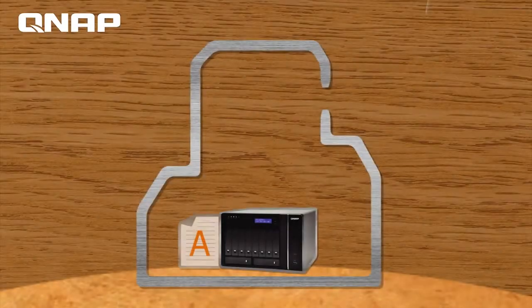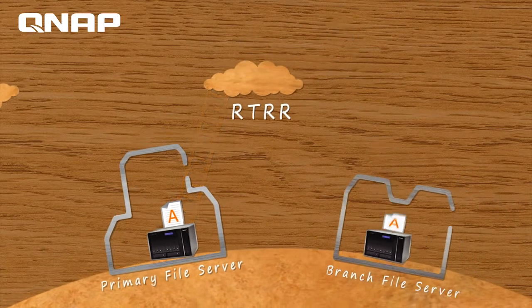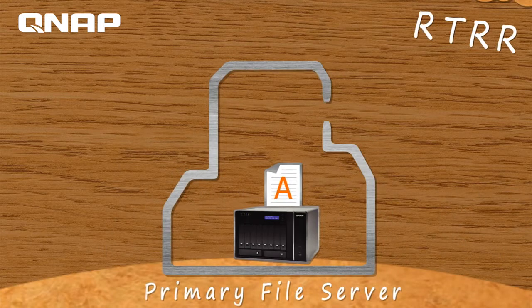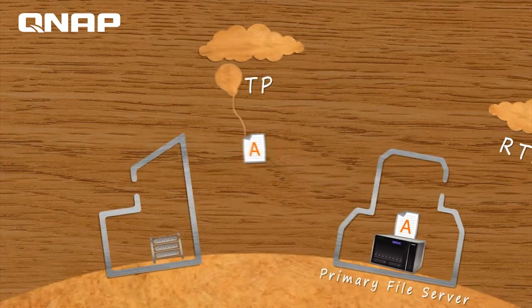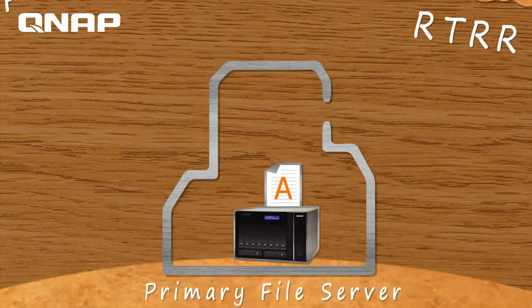Through RTRR, all you have to do is select the share folders on the NAS that you want to backup. Your NAS system will automatically monitor any file changes and backup the files to another location. You can choose to replicate files in real-time to a remote NAS or FTP server through internal network or across the internet.